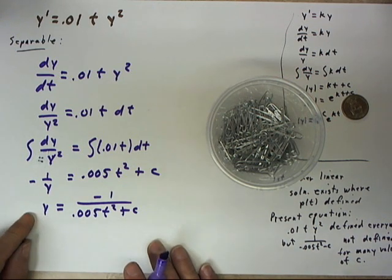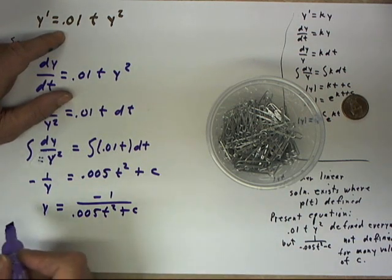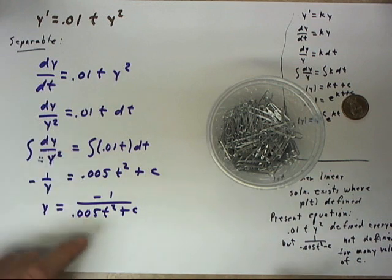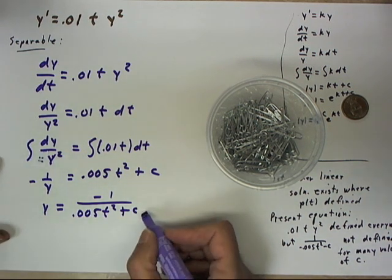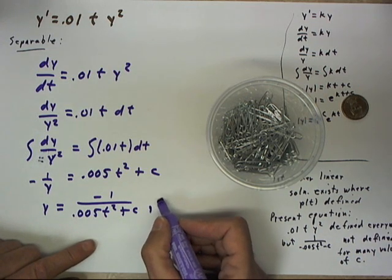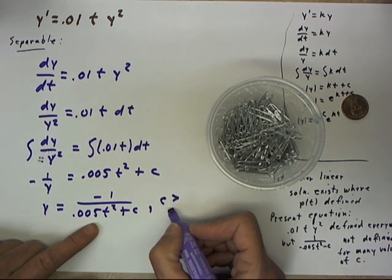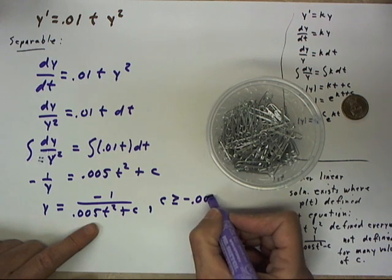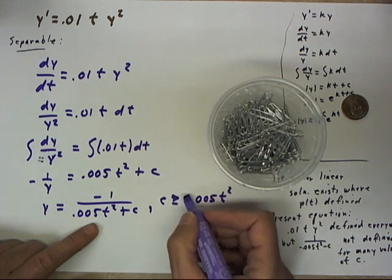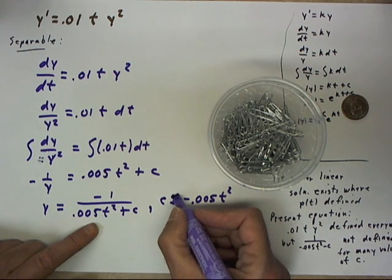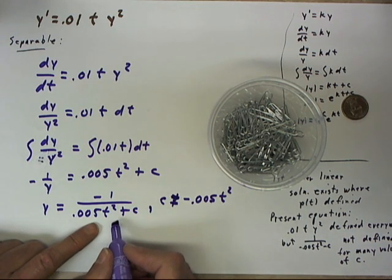So we've got a solution of this equation. Now if we have an initial condition, we can use the t value of the initial condition. We also note that this isn't defined for all c. This is only defined as long as c is not equal to negative .005t squared, because if it is our denominator is going to be zero.